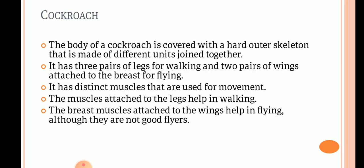The body of the cockroach is covered with a hard exoskeleton made of different units. It has three pairs of legs for walking and two pairs of wings attached to the thorax for flying. It has distinct muscles used for movement — the muscles attached to the legs help in walking, and the breast muscles attached to the wings help in flying, although cockroaches are not good flyers.